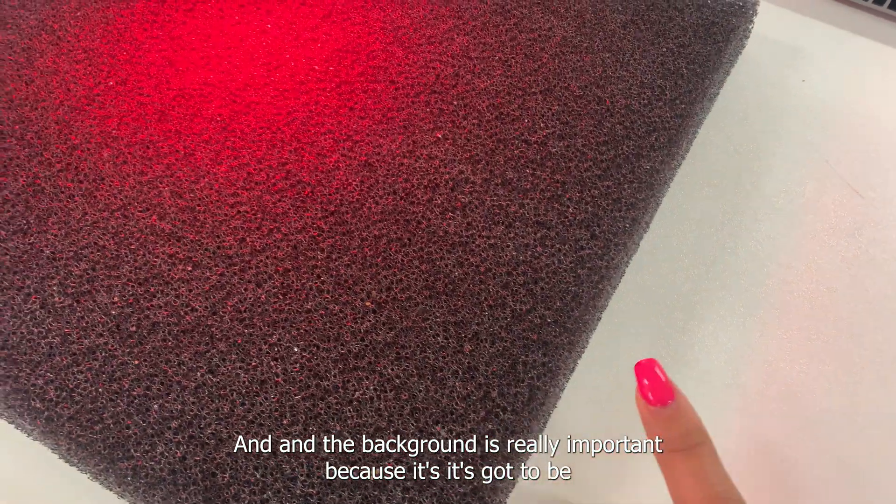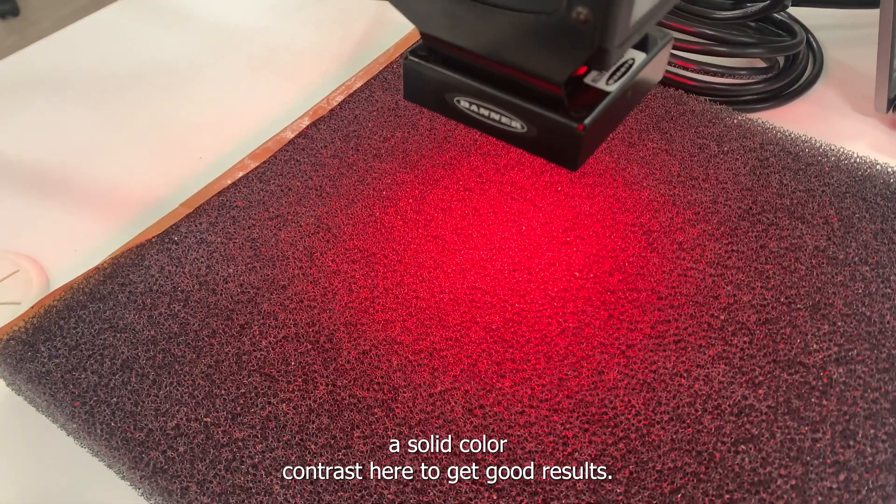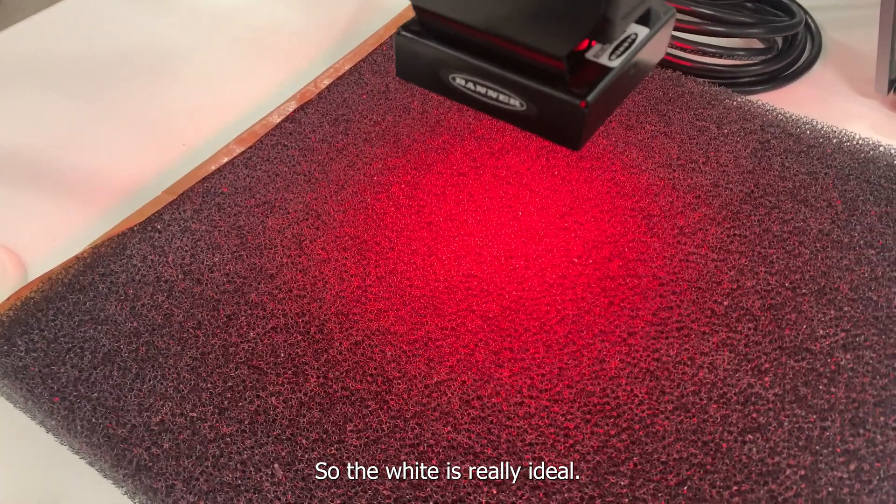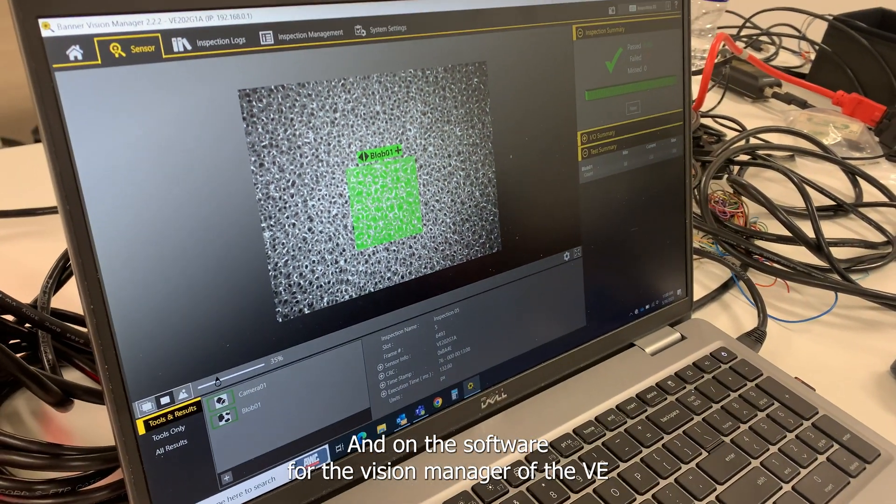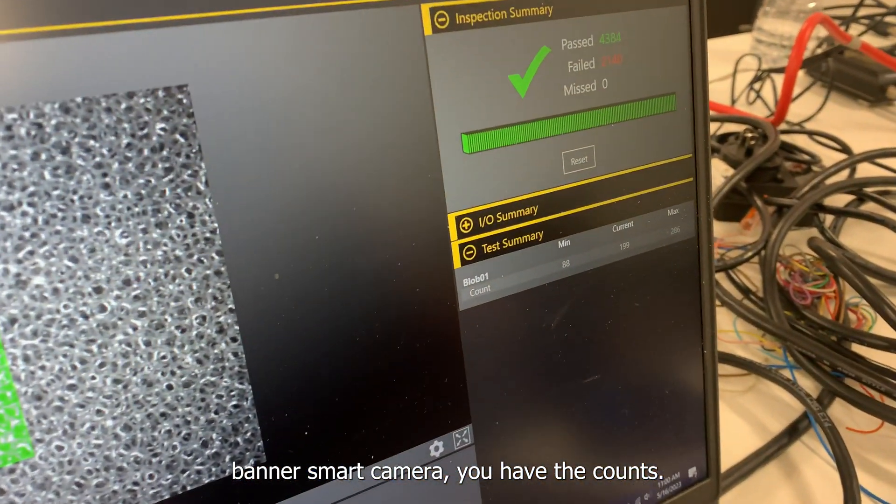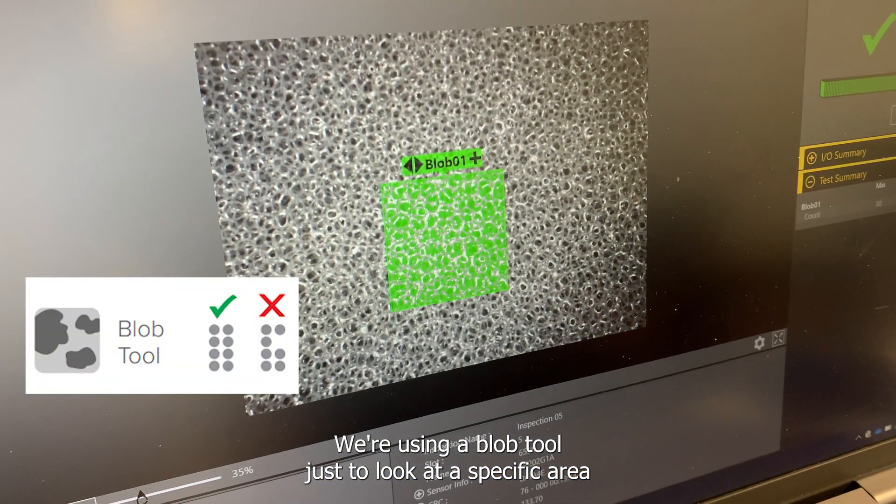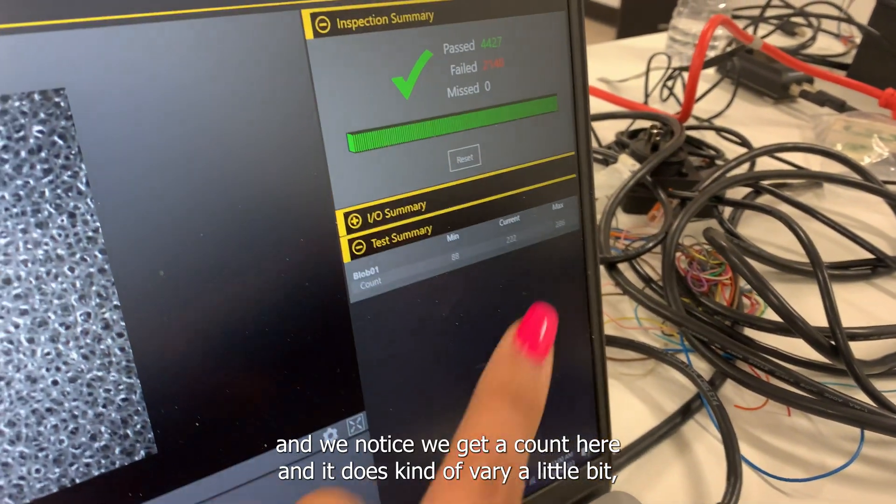On the software for the vision manager of the Banner camera, you have the counts. We're using a blob tool just to look at a specific area and we notice we get a count here. It does kind of vary a little bit, but that can be easily resolved with averaging on the PLC.